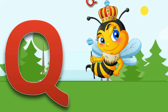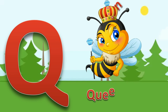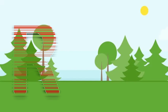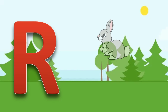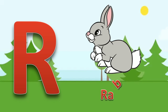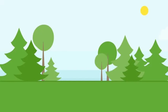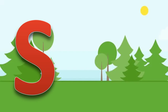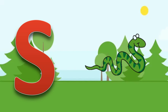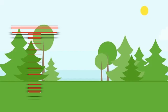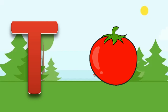Q for queen bee. R for rabbit. S for snake. T for tomato.